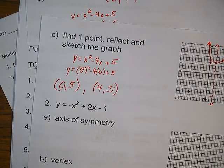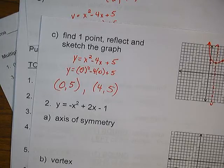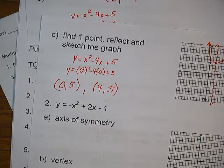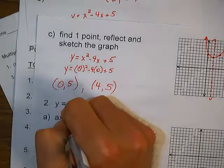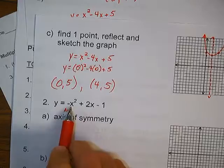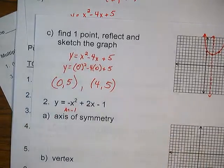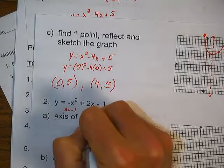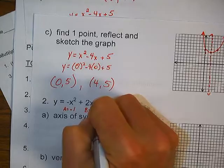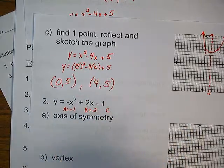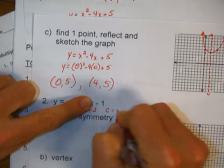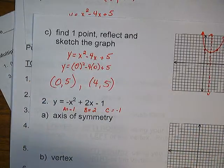Okay, number two. It says find the axis of symmetry. To repeat what we did just a second ago, first I find my a, b, and c. My a is whatever's in front of the x squared — a negative 1. My b is whatever's in front of the x — a 2. And my c is the number out by itself — in this case my c is negative 1.